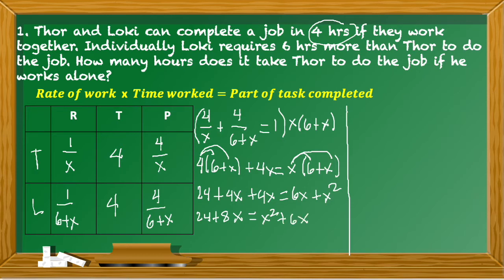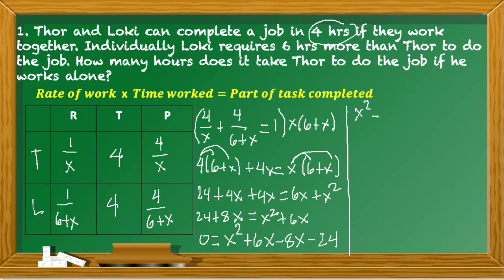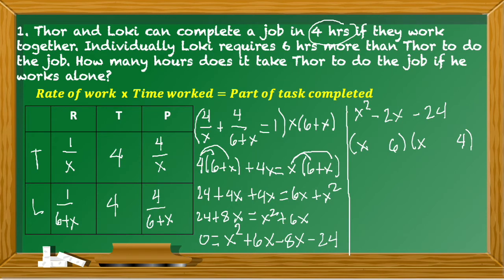Rearranging so everything is on one side and setting equal to zero: 0 = x² + 6x − 8x − 24, which simplifies to x² − 2x − 24 = 0. We can factor this quadratic. We need two numbers that multiply to −24 and add to −2, which are −6 and +4.